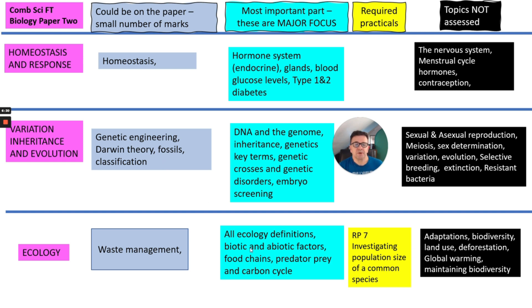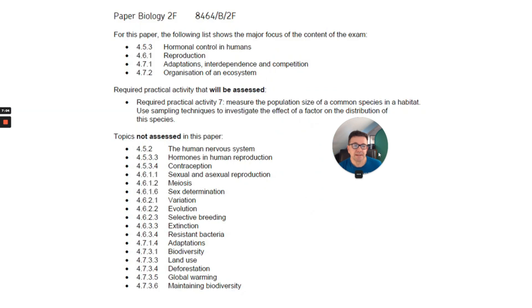For Ecology, all the definitions are needed — biotic and abiotic factors, food chains, predator-prey relationships, and the carbon cycle. You will need to know the required practical — estimating populations with a quadrat, for example. But there's quite a large section not involved, including adaptations, global warming, and maintaining biodiversity. As you can see, a lot more in Paper 2 has been taken out.